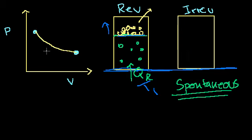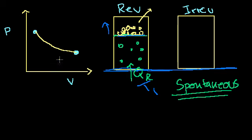The only reason we can even draw the state at every point along the path is because reversible processes are quasi-static — they're always infinitely close to equilibrium. When we say reversible, we're also saying there's no friction between the piston and the cylinder. If we put a grain of sand back, it'll go exactly to where it was before and no energy was lost. So this is what the graph of the reversible process would look like.